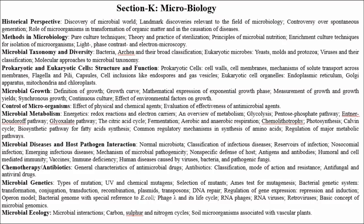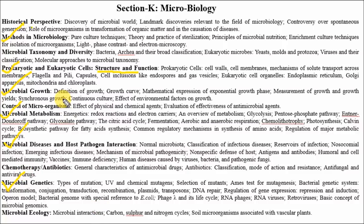In Section K, which is microbiology, the important chapters are methods in microbiology, structure and function of prokaryotic and eukaryotic cells, and microbial growth — which is very important, with 5 to 6 numerical questions asked from microbial growth kinetics. Microbial metabolism and microbial genetics are also important. So these 5 to 6 chapters of microbiology are very important.